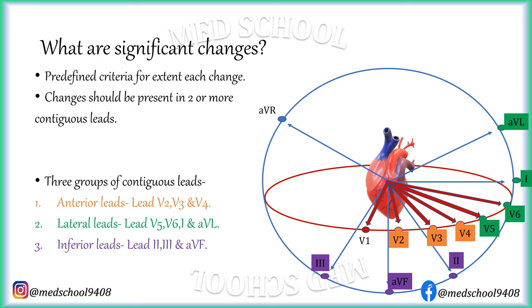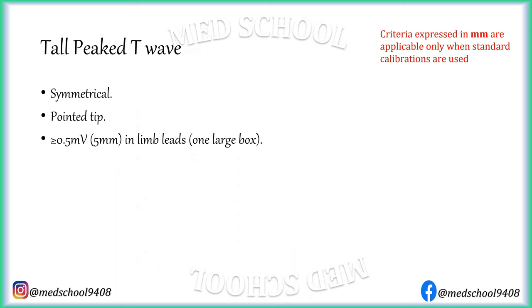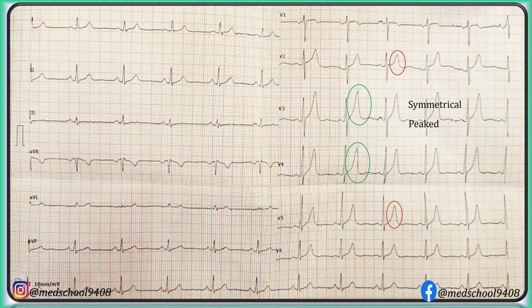Now let's understand the peculiarity of each ECG change and when it is considered significant. A significant tall T wave should be symmetrical with a pointed or peaked tip, taller than 0.5 mV (5 mm or one large box) in limb leads, and taller than 1 mV (10 mm or two large boxes) in precordial leads, at standard calibration. In this ECG, T waves in V3 and V4 are symmetrical, peaked, more than 1 mV tall, and present in two contiguous leads — hence these changes are significant.